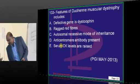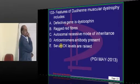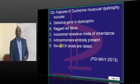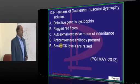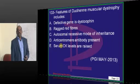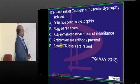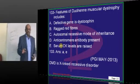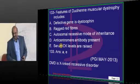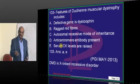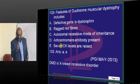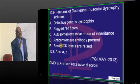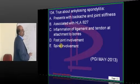Duchenne's muscular dystrophy is a very important topic involving a defective gene. Creatine kinase (CK) levels are typically elevated, but in very severe cases where muscle is completely dystrophied, CK levels fall. In initial phases, CK is elevated. The inheritance pattern — a favorite examiner question — is X-linked recessive.